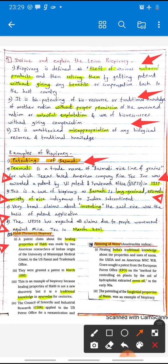A patent claim about the healing properties of haldi was made by two American researchers of Indian origin at a university. They were granted a patent in March 1995. This is an example of biopiracy because the healing property of haldi is not a new discovery.